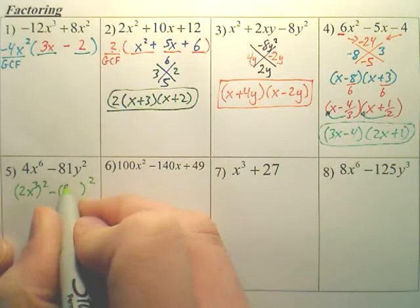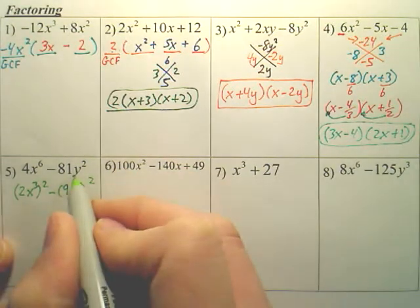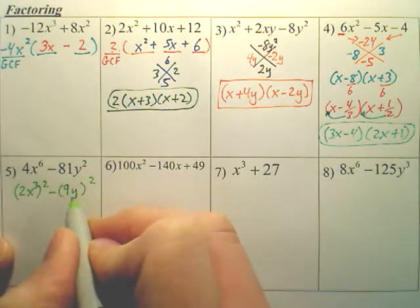What did you square to get 81? That's 9. What did you square to get y squared? That's y.